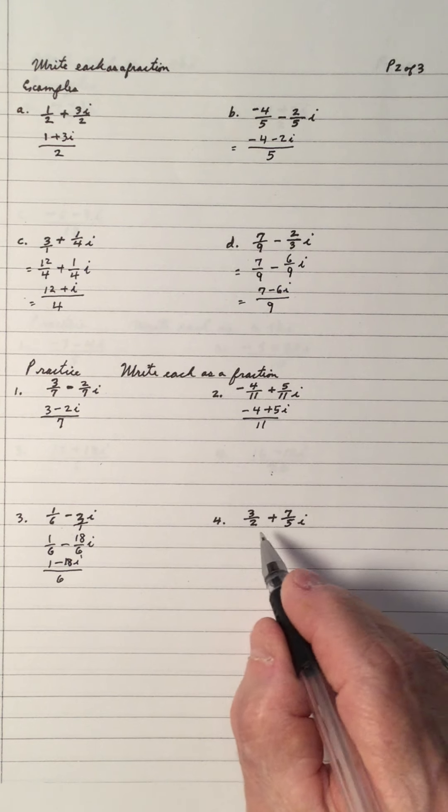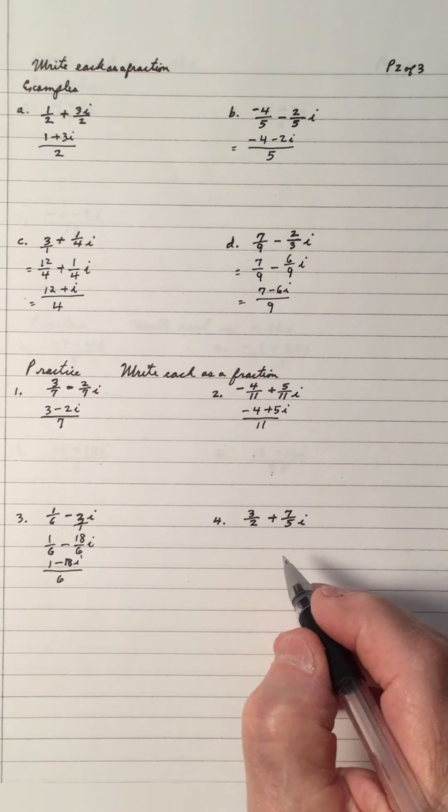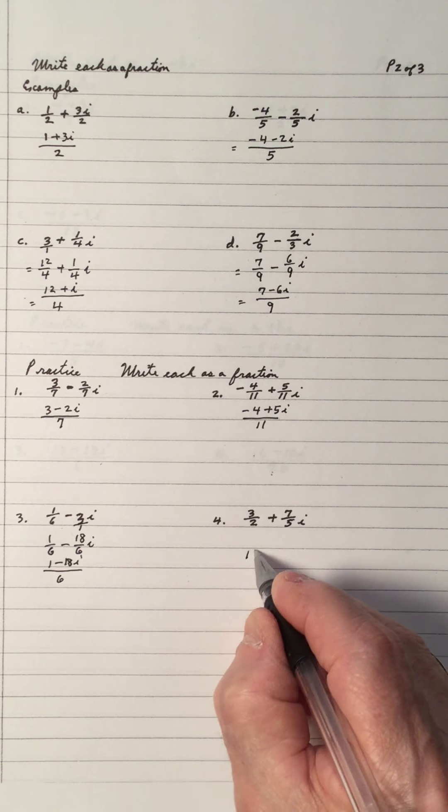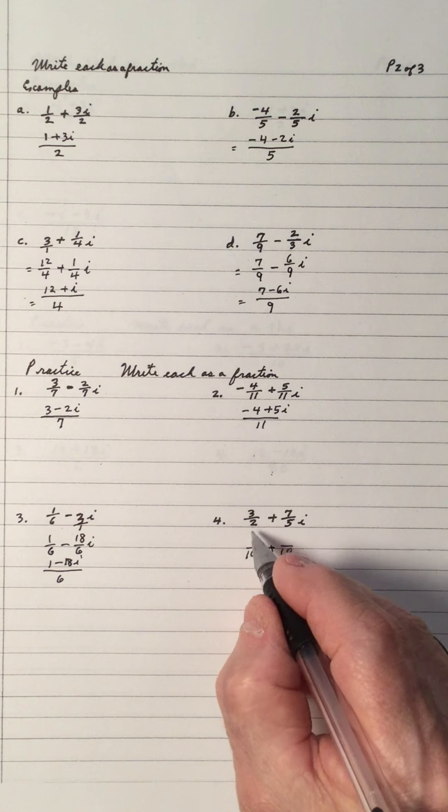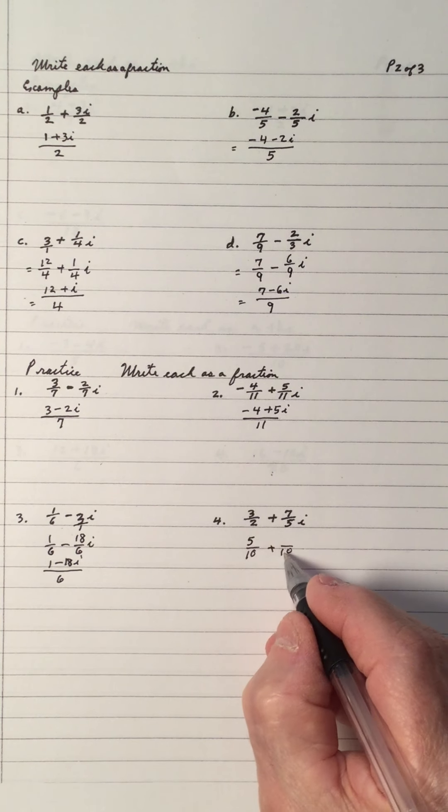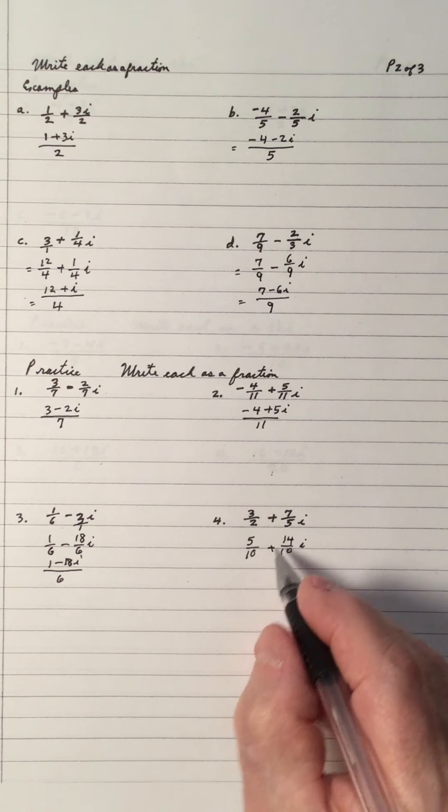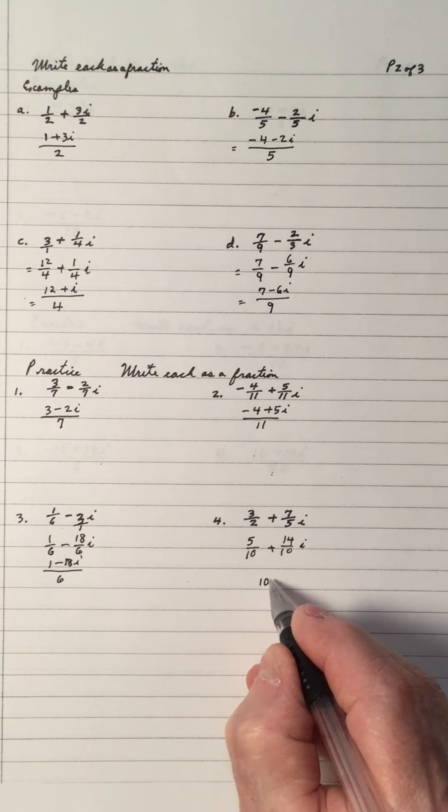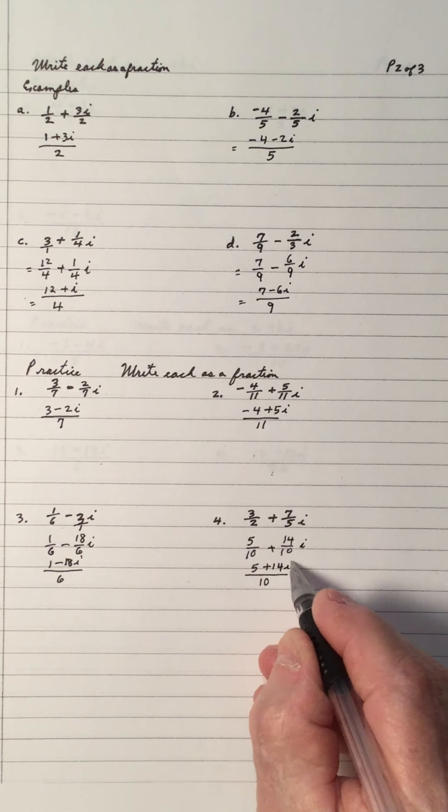Number 4, common denominator. We're adding 2 fractions. Common denominator for 2 and 5 is 10. So, we put down the 10 for each one denominator. 2 into 10 goes 5. 3 times 5 is 15. 5 into 10 goes 2. 2 times 7 is 14. And that gives us common denominator is 10. So, we get 5 plus 14i.